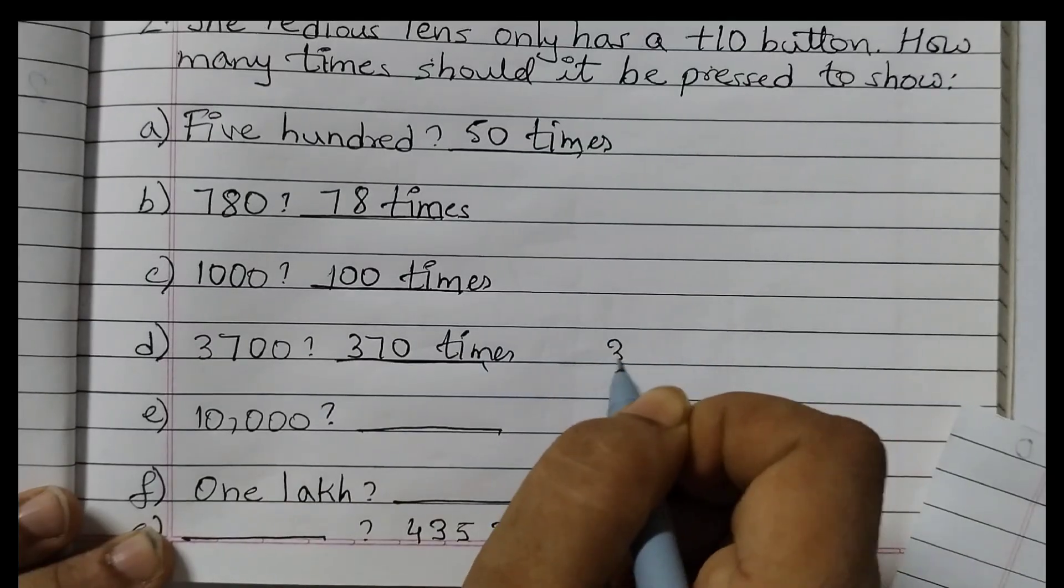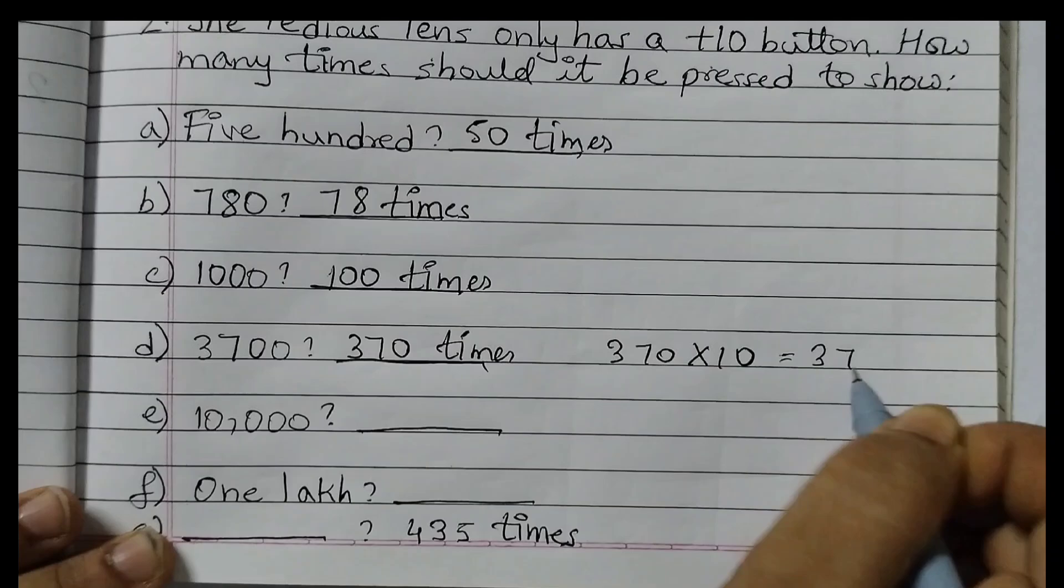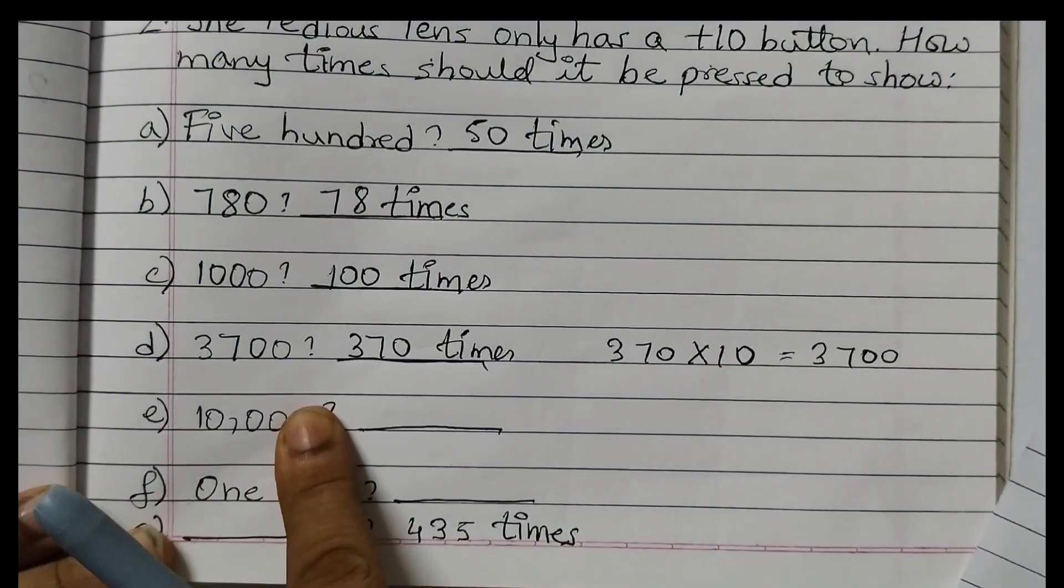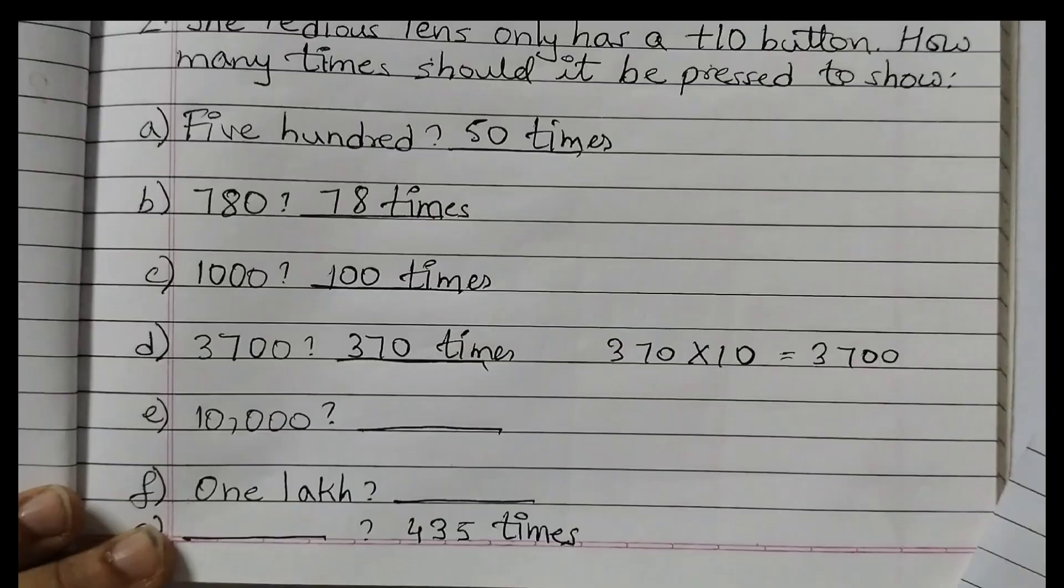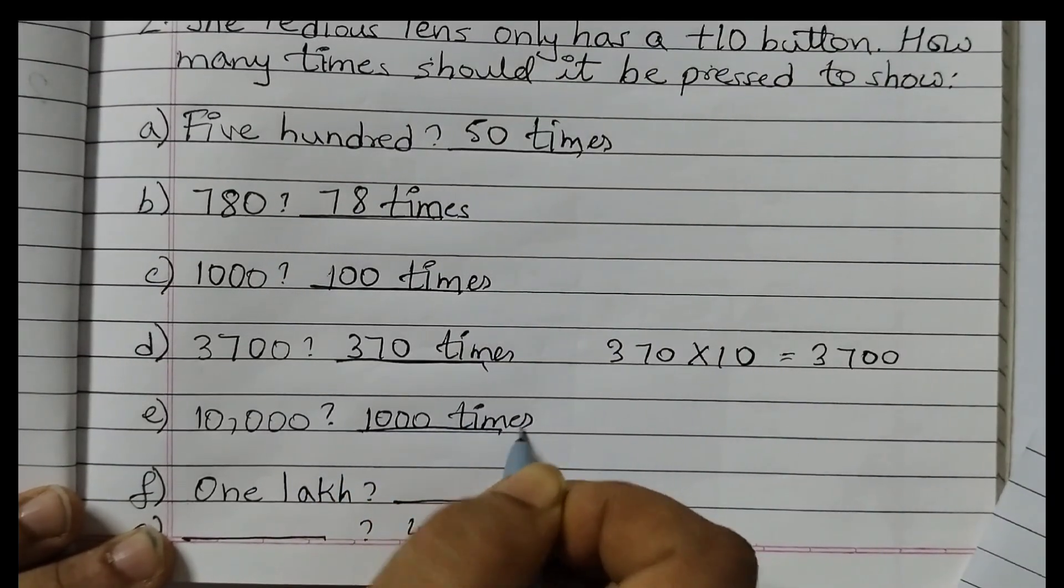10,000. So hide this 0. We get 1000. So 1000 times.